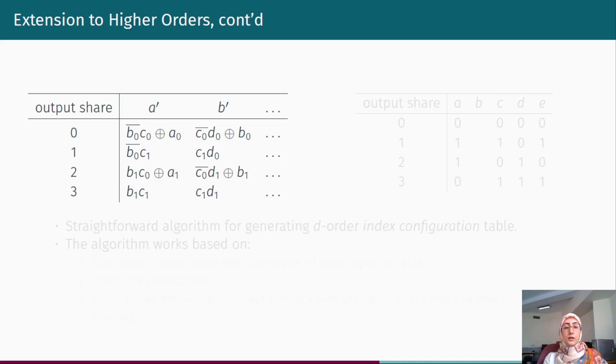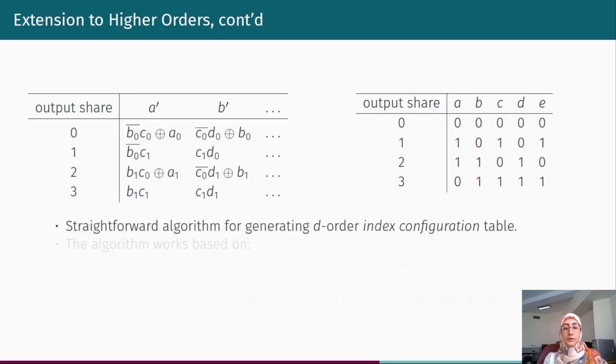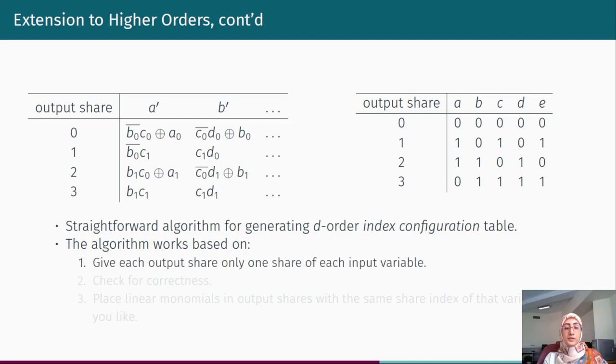The share indexes are given to component functions according to a table called index configuration table. This table can be generated for any arbitrary order according to an algorithm that we have provided in detail in our paper. The structure of this algorithm is based on three steps. First is to give each output share only one share of each input variable. Then is to check for correctness of the masking. Meaning that the alignment should assure that every two adjacent columns cover all combinations of the share indexes. And finally is placing linear monomials. There is freedom to place them in output shares with the same share index of that variable.